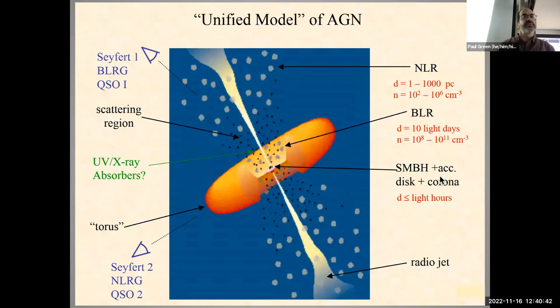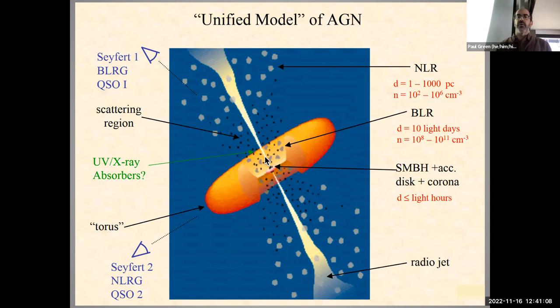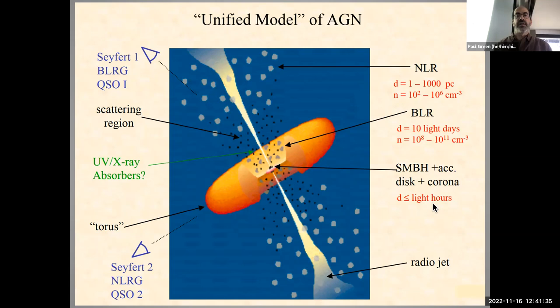This is the classic unified model picture: down here you have the accreting supermassive black hole, close in there's the broad line region moving rapidly in the gravitational field. Farther out are the narrow line region clouds. If you look directly down, you see broad lines, but if your orientation cuts through the dusty molecular torus you might not see the broad lines at all. But things get tricky because AGN vary a lot.